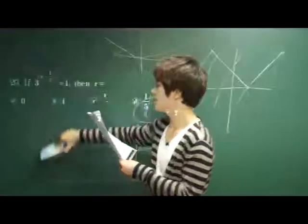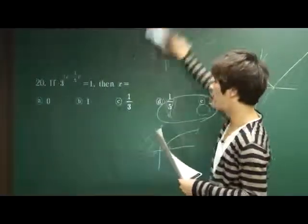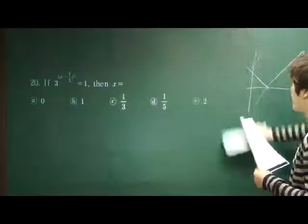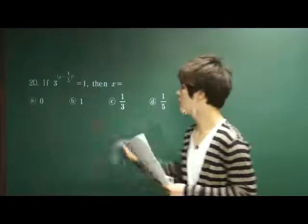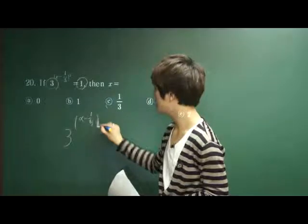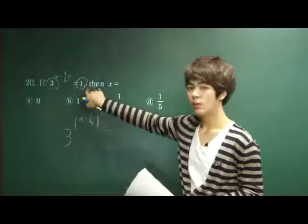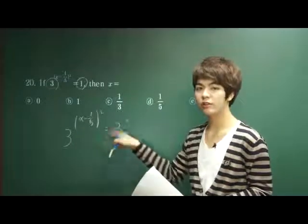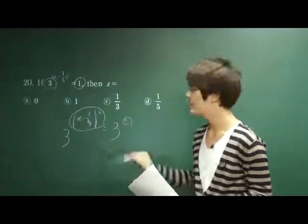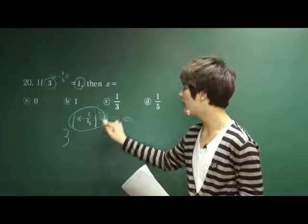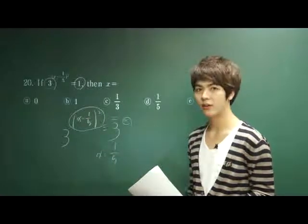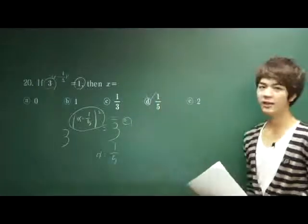Let's move on to number 20. If 3 to the power of (x minus 1/5) squared is equal to 1, what is the value of x? When comparing these expressions, we should equate the bases. We have 3 to the (x minus 1/5) squared. The number 1 can be rewritten as 3 to the 0 power, so (x minus 1/5) squared must equal 0. Therefore, x must equal 1/5, and answer choice D is correct.